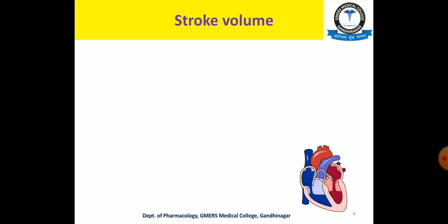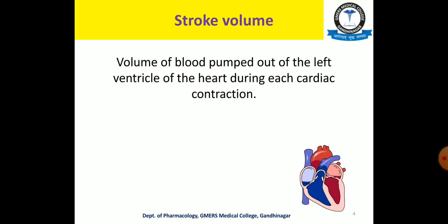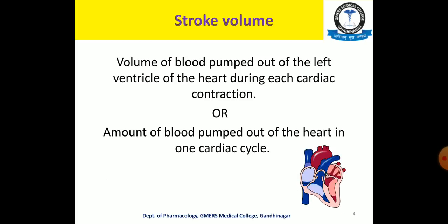What do we mean by stroke volume? We all know that the heart is continuously and automatically contracting. So with each stroke, the volume that is ejected out is called the stroke volume. In better terms, it is the volume of blood pumped out of the left ventricle during each cardiac contraction, or the amount of blood pumped out of the heart in one cardiac cycle.